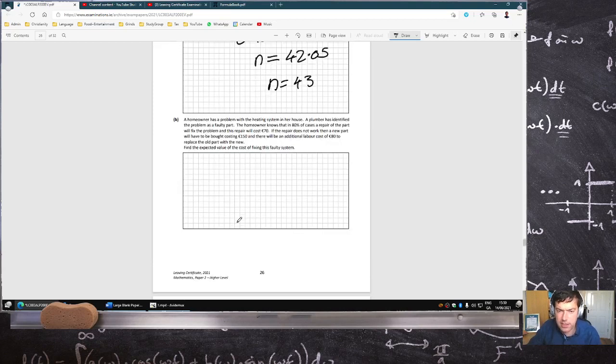A homeowner has a problem with the heating system in her house. A plumber has identified the problem as a fault. The homeowner knows that in 80% of cases the repair will fix the problem. Costs 70 euros. It's looking like a tree here. So the repair will either work or fail. That's 0.8 and that's 0.2. And that will cost 70 euros.